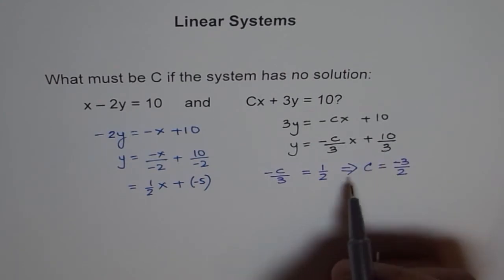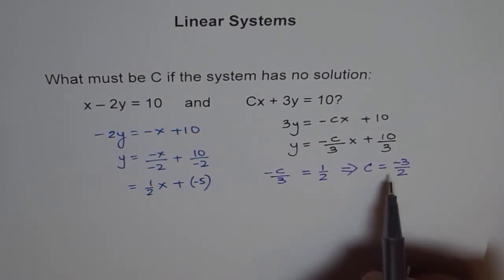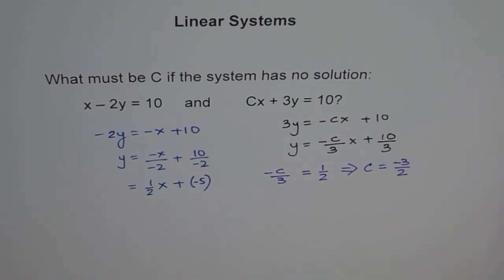And therefore, the two lines will be parallel and distinct with no point of intersection or, in other words, no solution. Therefore, that is the solution, C equals minus 3 over 2. Fine? Thank you.